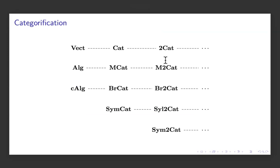Before I dive into details, maybe it's beneficial to show you this interesting periodic table. There are two directions. Going from left to right across each row, we have mathematical structures with increasing categorical levels. We start over a base field of complex numbers for simplicity, beginning with vector spaces.